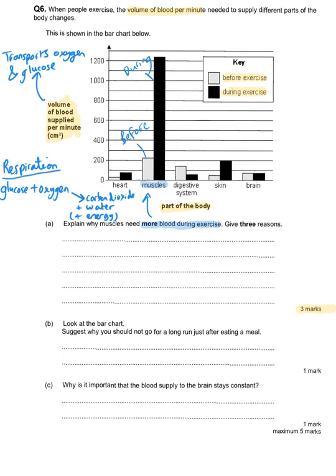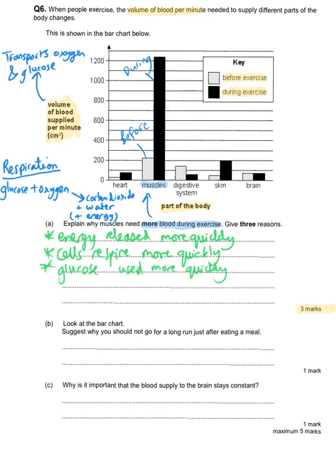When we exercise, energy needs to be released more quickly and that's because the cells will respire more quickly. In addition to that, we can say that the glucose is used up more quickly. Or we could say that the oxygen is used up more quickly. We've already got more than three points here, we can say any of these three.